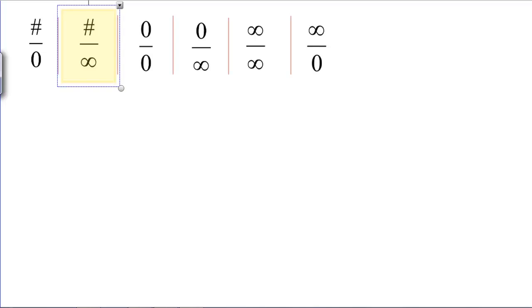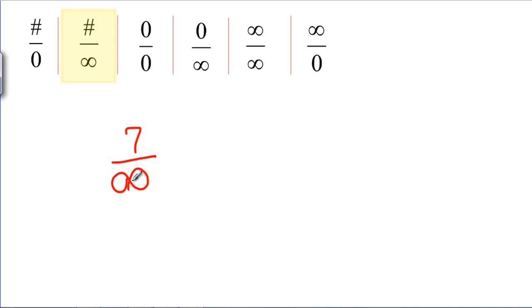Next we have a number divided by infinity — something like 7 over infinity. Seven hundredths, seven thousandths, seven millionths — this is getting really small. This is going to zero.